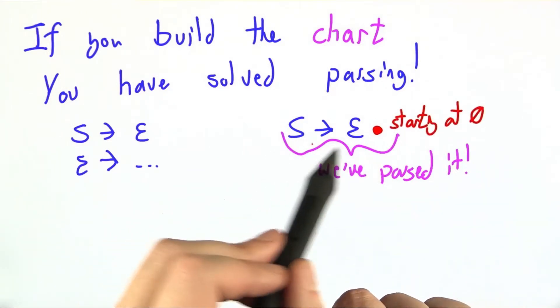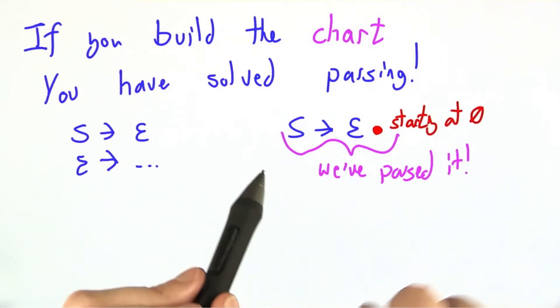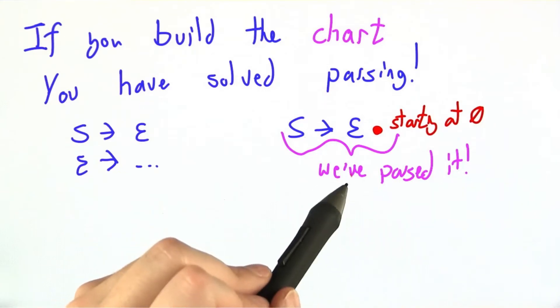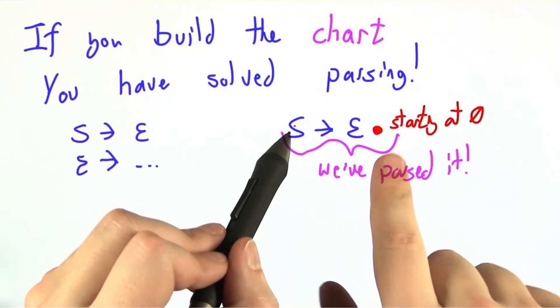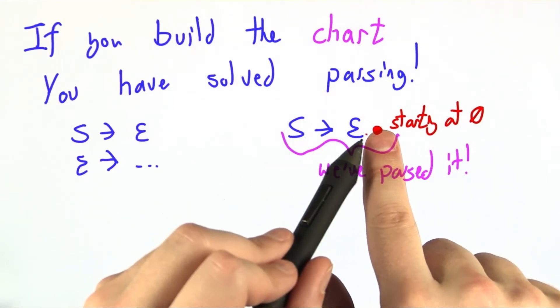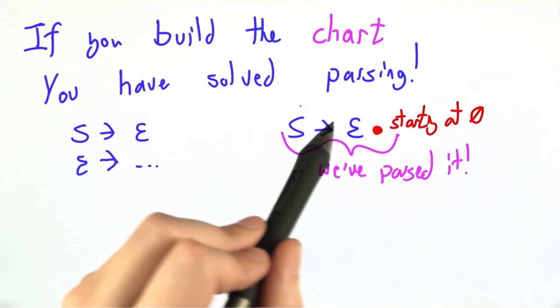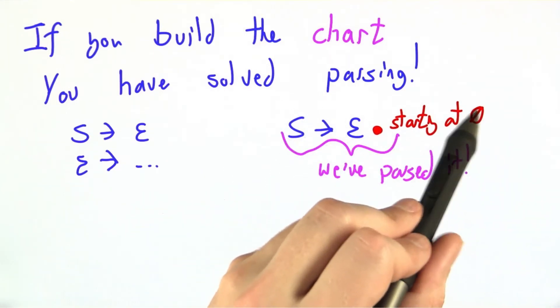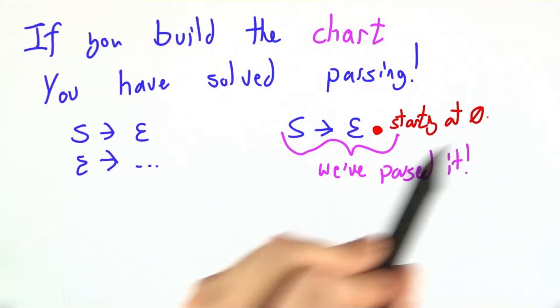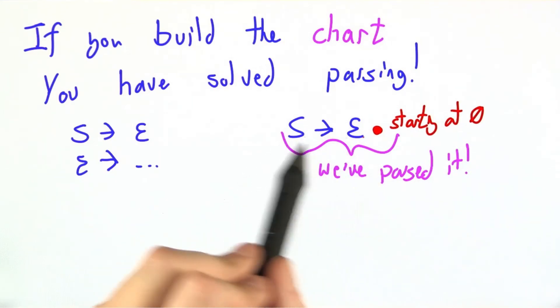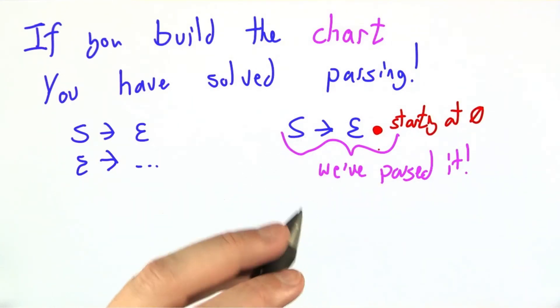I mentioned before that we have to augment all of our parse states with this starting at information. So just to be a little more specific, I have seen s goes to e, and there was no additional previous information. Starting from zero tokens of input, I have seen enough to make the judgment s goes to e based on this input string.